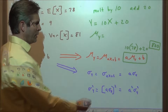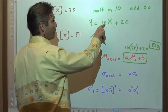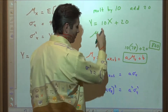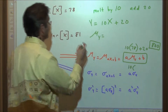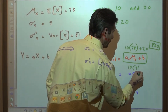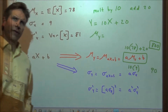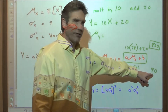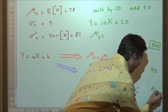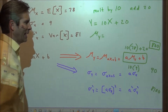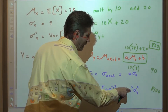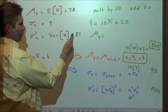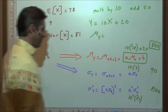What happens to the standard deviation? It's only the multiplier — the 10 we multiply by, not the 20 we add — that's going to affect the spread. So we take the multiplier 10 times the standard deviation of x, which was 9, giving us a new standard deviation of 90. The easiest way to get the new variance is to square the new standard deviation: 90 squared is 8,100. Alternatively, A squared times the old variance: 10 squared times 81 is also 8,100.